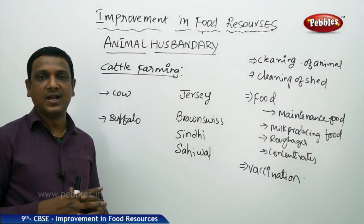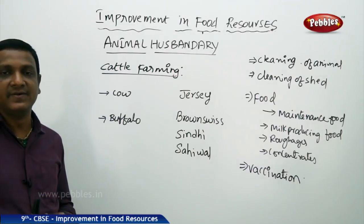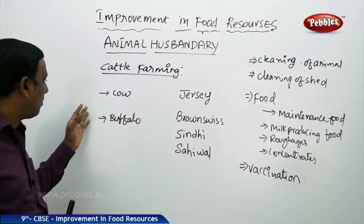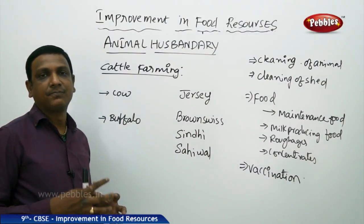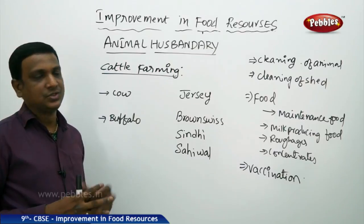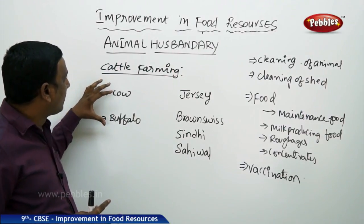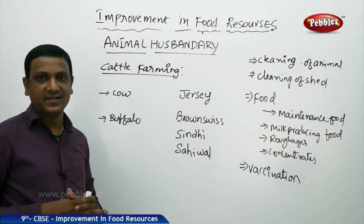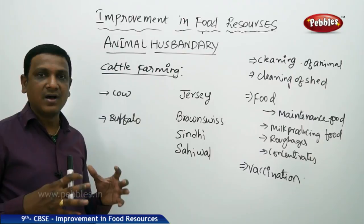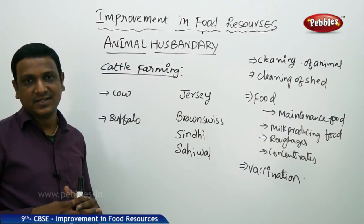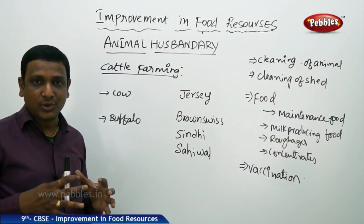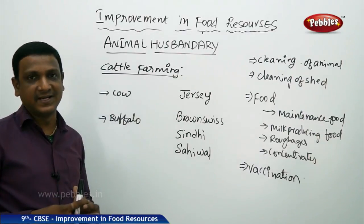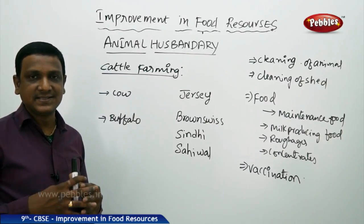Male animals are used for agricultural activities, while female animals like cows and buffaloes are used for milk production. The dairy industry is a major part of food production. Indian or desi varieties of cows and buffaloes are good at resisting local diseases and are well adapted to local climatic conditions, but their milk production is less compared to foreign varieties.